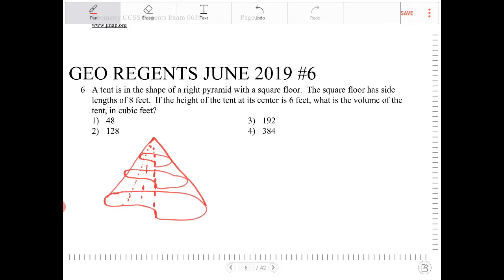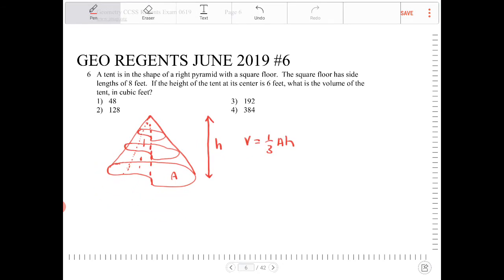So anyway, finding a volume of something like this, it's simply the area of the base times the height times one-third. And this is true for any kind of pyramid or cone or anything that culminates to some vertex.